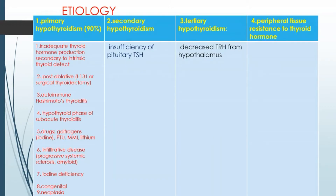Etiology of hypothyroidism: primary hypothyroidism accounts for 90% of cases, followed by secondary hypothyroidism, tertiary hypothyroidism, and peripheral tissue resistance to thyroid hormone.